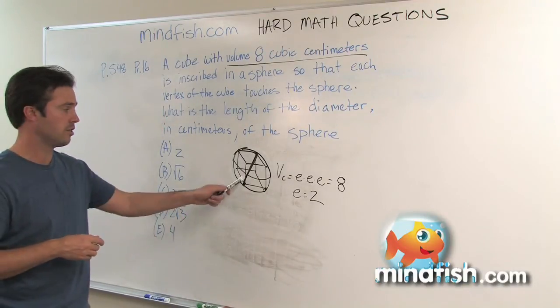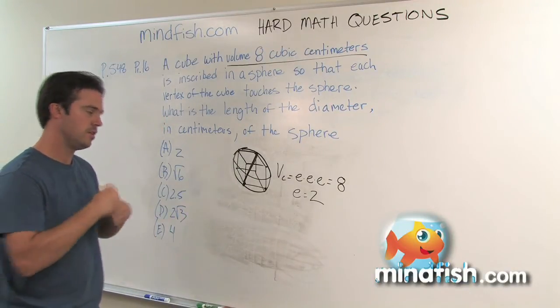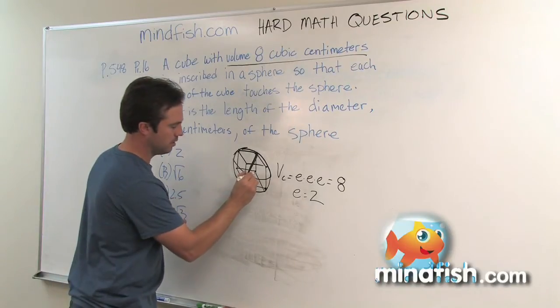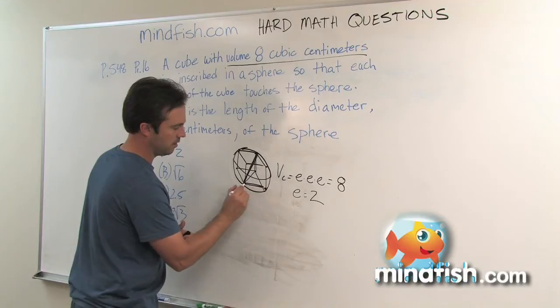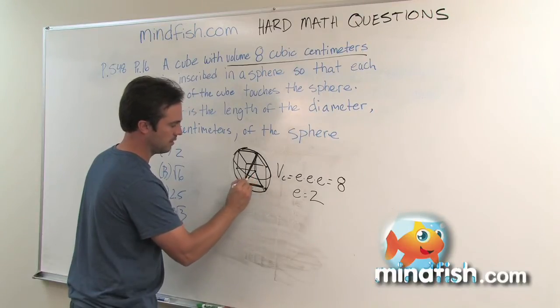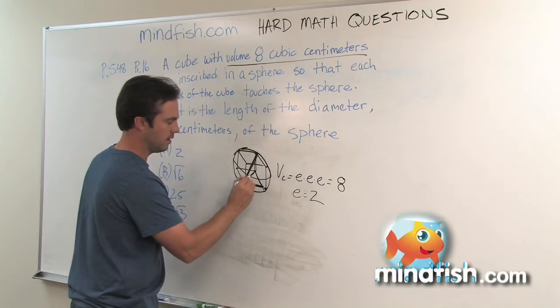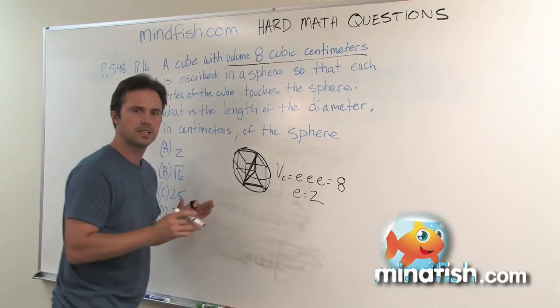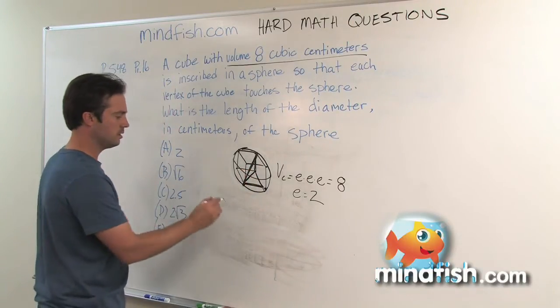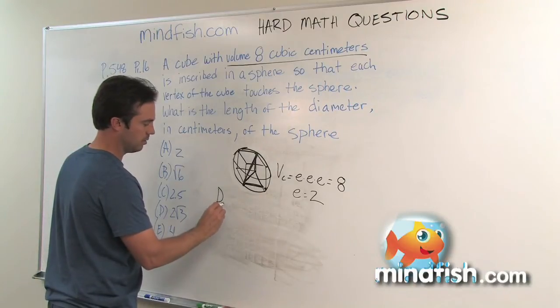A diagonal is essentially a three-dimensional distance. If you don't want to do three-dimensional distance, you could look at this as Pythagorean theorem twice. You would do Pythagorean theorem with this side and this side to get this side, and then do Pythagorean theorem with this side and this side to get this side. Personally, I just think that's too much work.